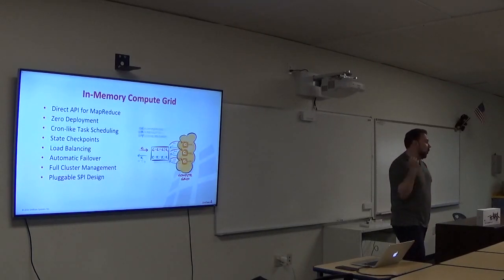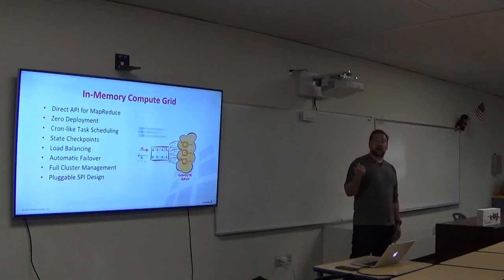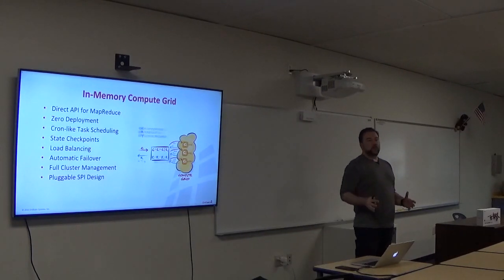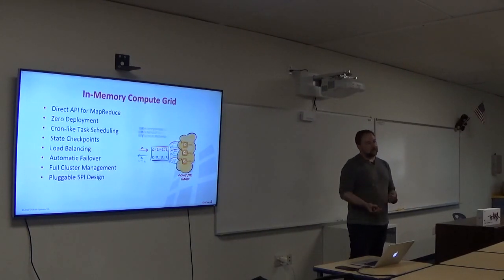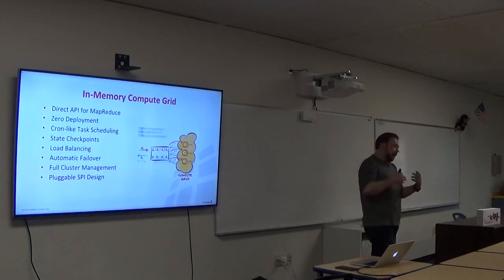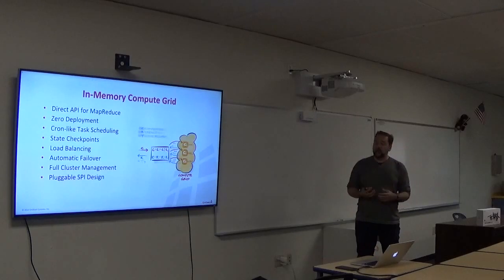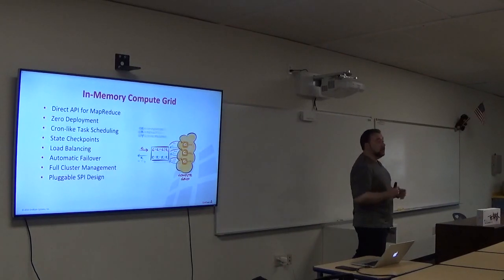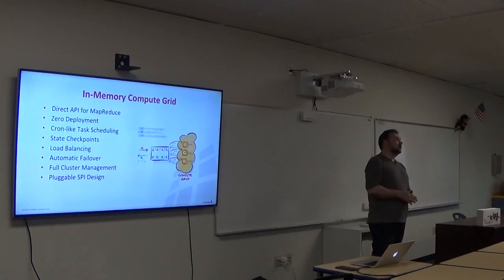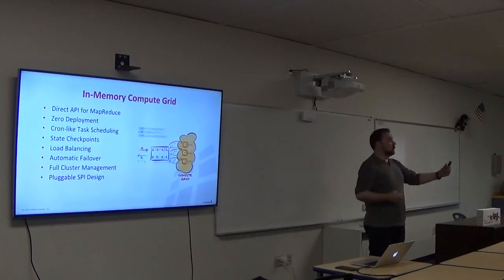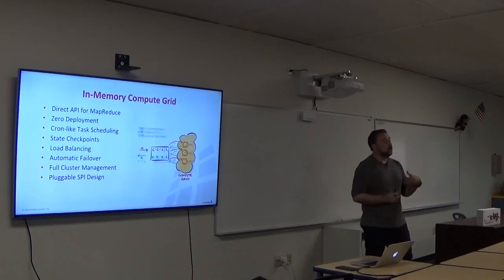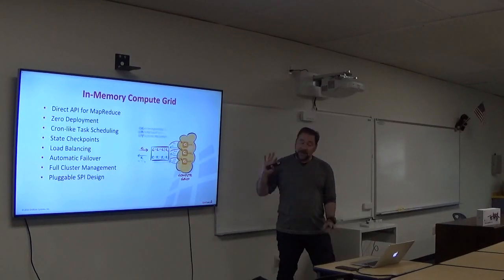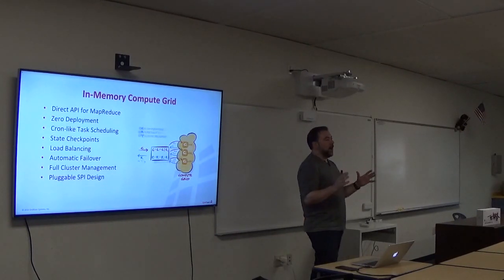Naturally, we have comprehensive load balancing and automatic failover. Not only do we have automatic failover — we give you the ability to detect the failover and react in a specific way, because there are endless ways to react to a job failure: you can take the portion of the job, restart from a different node, change parameters, and so on. We give you control over how to do it, while also providing built-in defaults. That's the compute grid — the idea of how to do high-performance parallel computing.